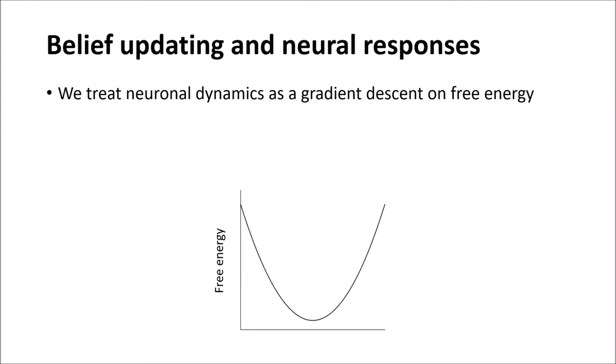We can also simulate neural responses using this framework by treating neuronal dynamics as a gradient descent on free energy. So we can think of this as starting off at one point on this function and descending until we reach the free energy minimum.